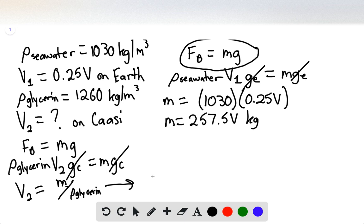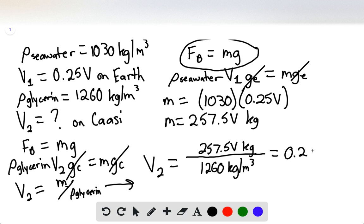At this point, we can see that we simply need to substitute for our values, 257.5 V kilograms divided by the density of glycerin being 1260 kilograms per meter cubed. We find that this is going to be equal to 0.204 V, which means that on Cassi, 20.4% volume submerged.